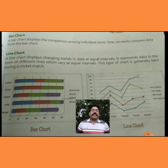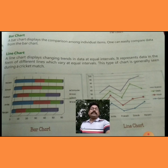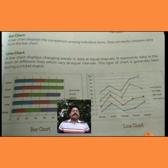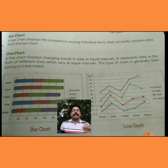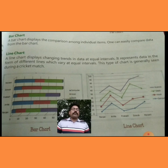Line Chart. A line chart displays changing trends in data at equal intervals. It represents data in the form of different lines which vary at equal intervals. This type of chart is generally seen during a cricket match. आप देख सकते हैं यहाँ screen पर कि line chart कैसा है। Line chart का अक्सर उपयोग cricket matches में किया जाता है — जिसमें कई तरह की lines होती हैं, जो दिखाती हैं कि balls कहाँ-कहाँ जा रहे हैं, players किस तरफ हैं, ball की speed कितनी है, किस तरफ से फेंका गया और किस तरफ से निकला।